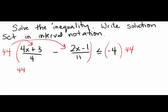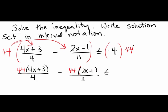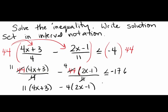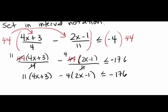You're thinking of the 44 going into the numerator of each of these fractions. On the right, 44 times 4 gives us negative 176. The reason for multiplying by 44 is to get the denominators to cancel — 4 goes into 44 eleven times, and 11 goes into 44 four times. So we go straight to: 11 times (4x + 3) minus 4 times (2x − 1) is less than or equal to negative 176.